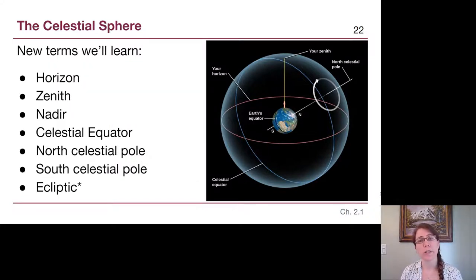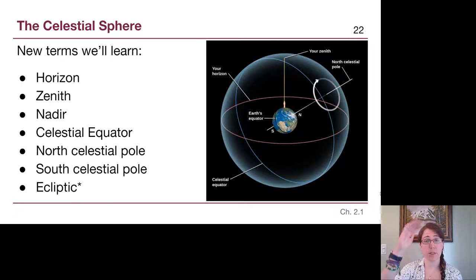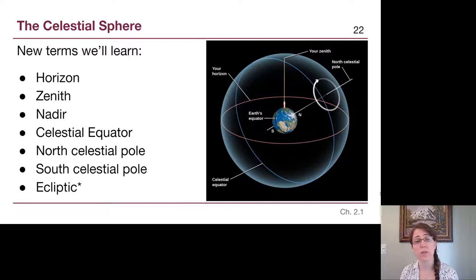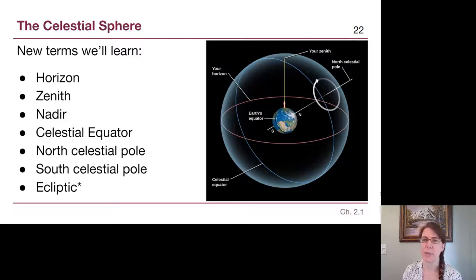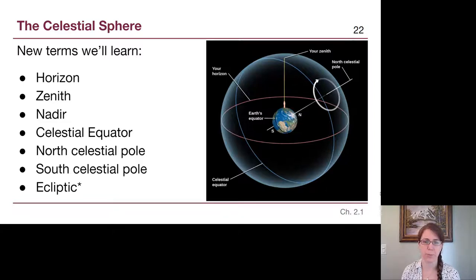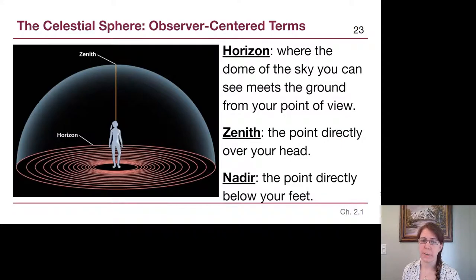The terms we need to have in our vocabulary are listed on this slide. The next two slides will go through the definitions of the first six. The last term, the ecliptic, we'll first talk about in the second video as it's a little more difficult to talk through. Let's start with the first three.